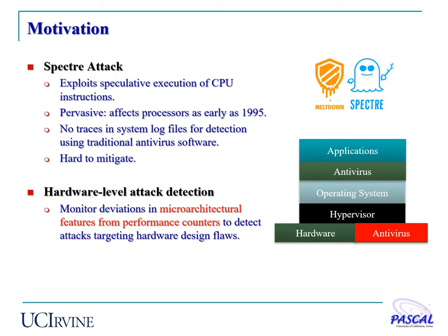This paper focuses on detecting Spectre attacks. Spectre attack basically exploits speculative execution of CPU instructions, which is widely adopted on most modern processors. It is hard to detect using existing software-based antivirus because most software antivirus relies on analyzing system log files. However, Spectre attacks leave no traces in the system log files.